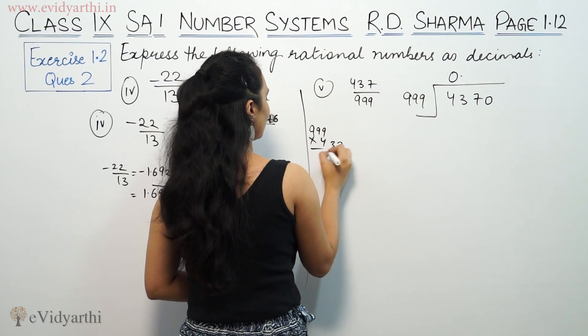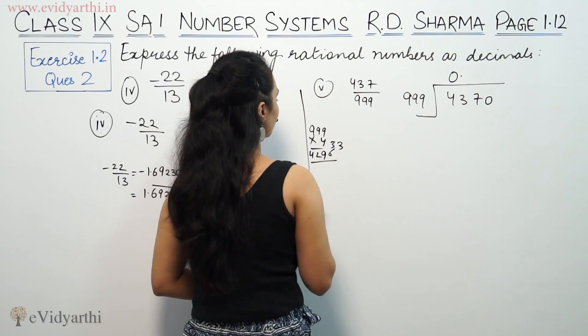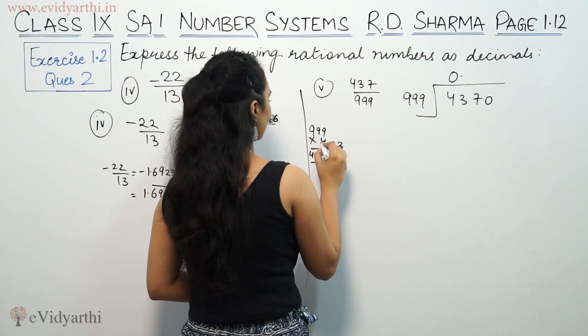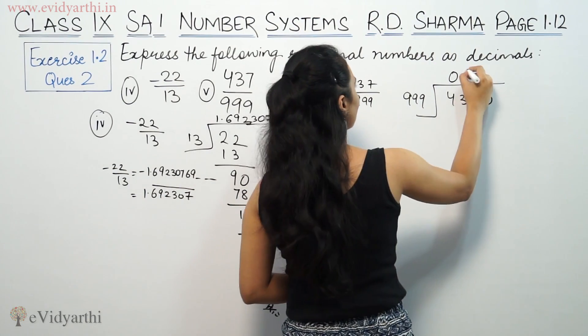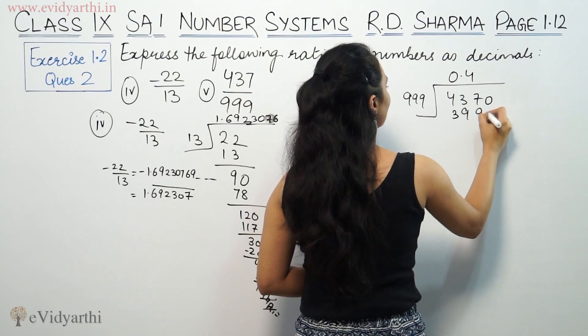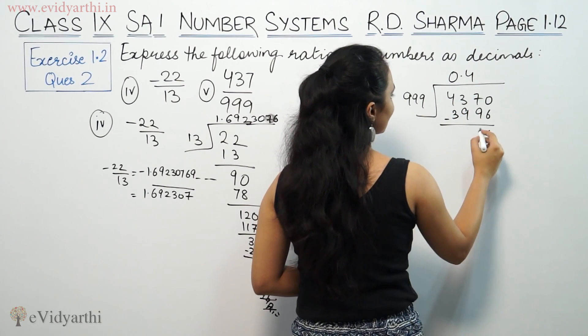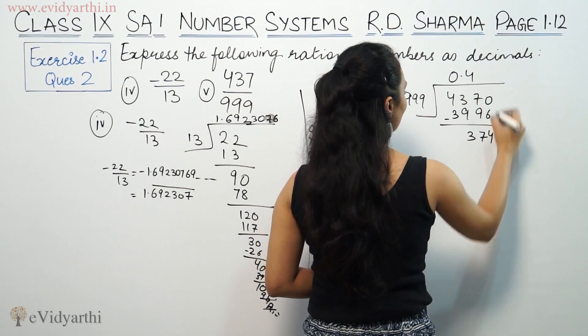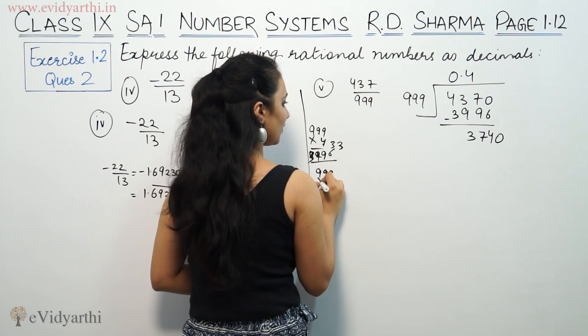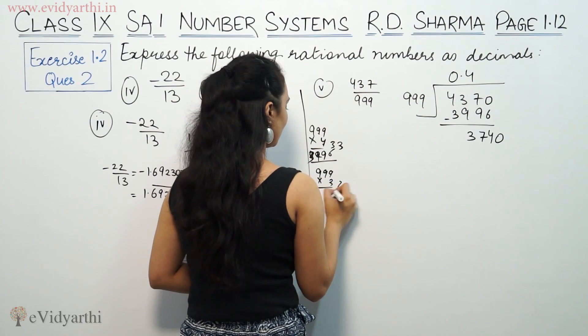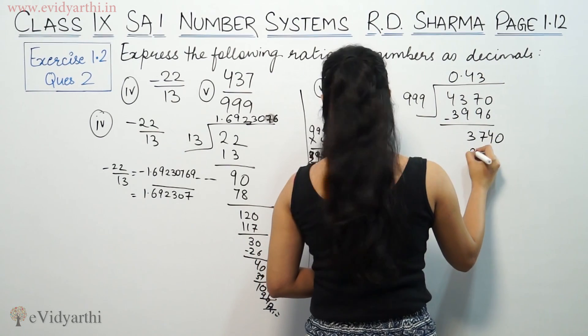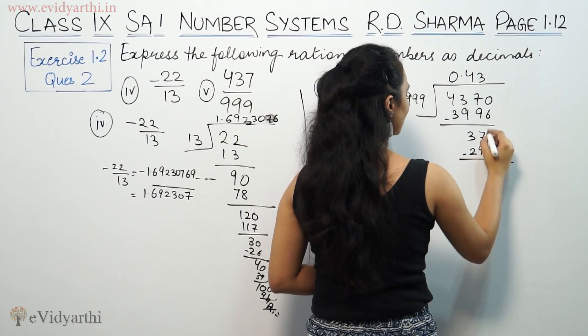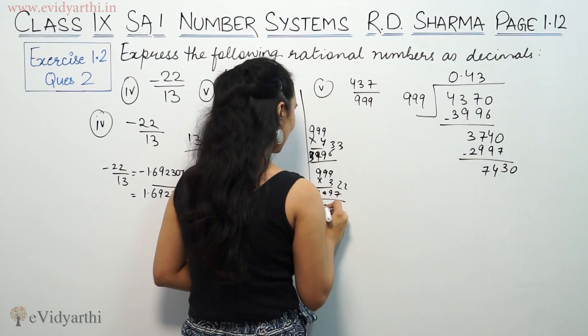Now 999 times 4 is 3996. This gives us 37, bring down zero. 999 times 3 gives 2997. Then we get 403, bring down zero. 999 times 4 is 3996. Then 999 times 7 gives 6993.